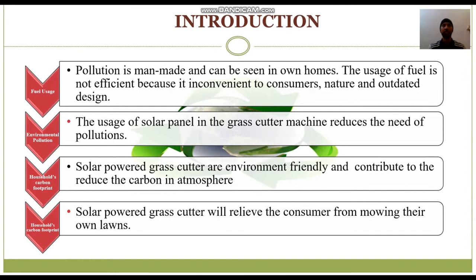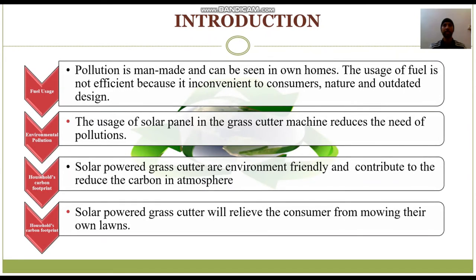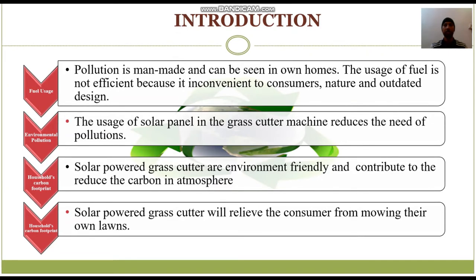Introduction: Fuel usage pollution is man-made and can be seen in our own homes. The usage of fuel is not efficient because it is inconvenient to consumers, and reflects an outdated design. The usage of solar panels in the grass cutter machine reduces pollutants such as carbon dioxide and carbon monoxide. Solar Powered Grass Cutters are environmentally friendly, contribute to reducing carbon in the atmosphere, and will relieve consumers from mowing their own lawns.